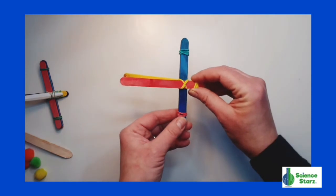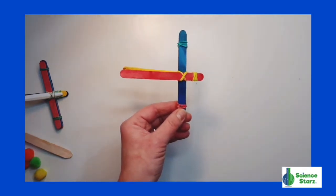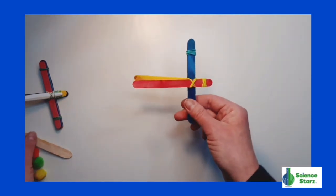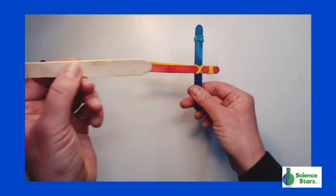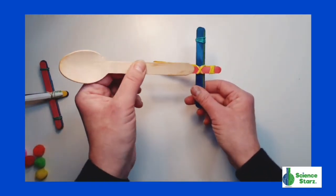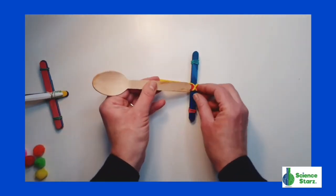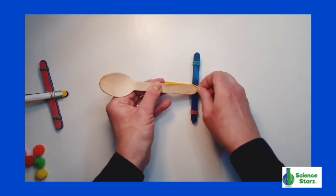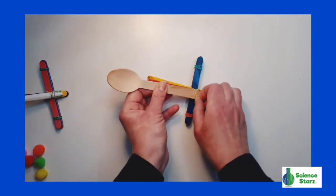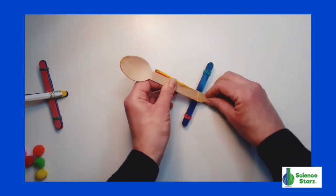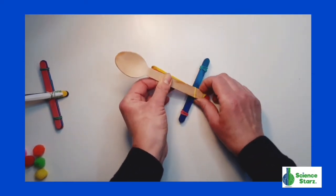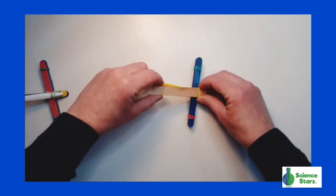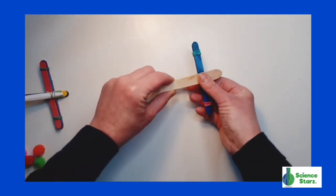Now, we need something to hold our projectile or our missile, the pom-pom or the ping-pong ball. What we're going to do, we're going to take our spoon and if you can lift up a few of the elastics, slide the base of the spoon underneath the elastics. If you can't get it under, don't worry, we'll come back to that.